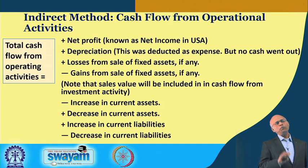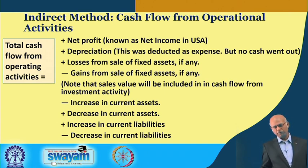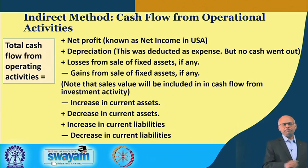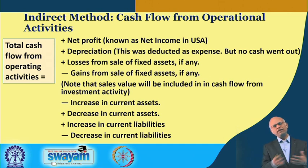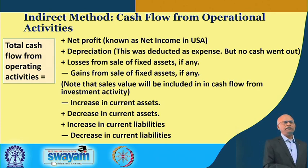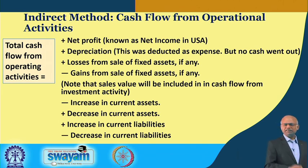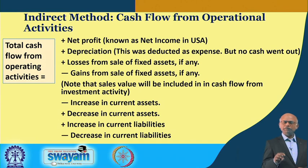There are two methods of estimating the cash flow statement. Both lead to the same net cash amount — the same cash flow from operating, investment, and financing activities — but the method of estimation is different. One is the direct method and the other is the indirect method. In the direct method, they take into account all kinds of income and all kinds of expenses and make a net of that, and they do not consider depreciation as an expense in that calculation. The other method, the indirect method, starts with net profit and does not re-enter all the expenses like raw material, salary, and wages, because they are already captured in the profit and loss account.